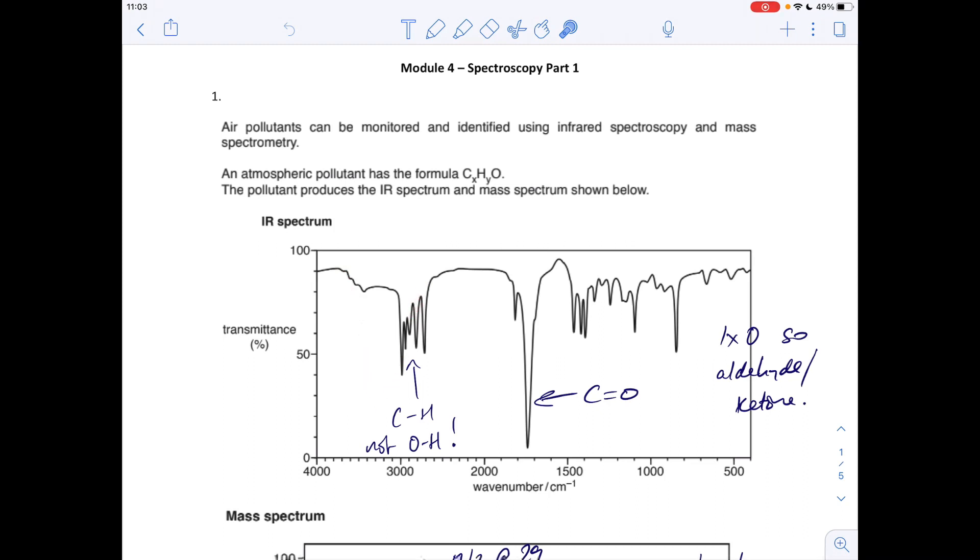That would indicate an OH group, so it definitely hasn't got an OH group. This thing here you can see from the fact it's only got one O it's not going to be a carboxylic acid anyway. So basically what I'm doing here is ruling out an alcohol. These spiky absorptions at around 3000 you always get something like that and that's due to CH bonds.